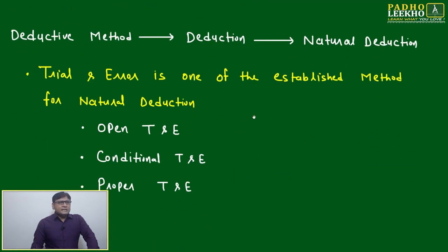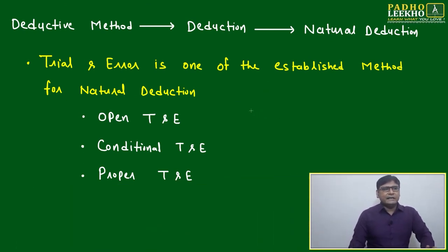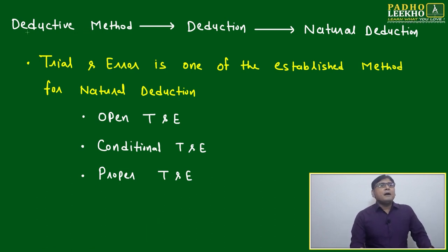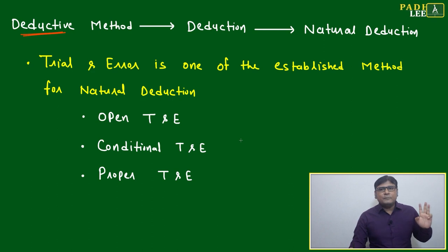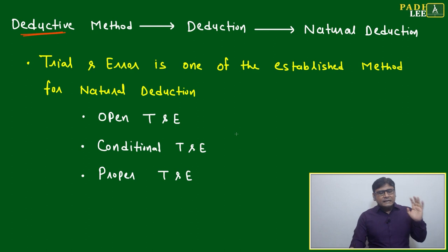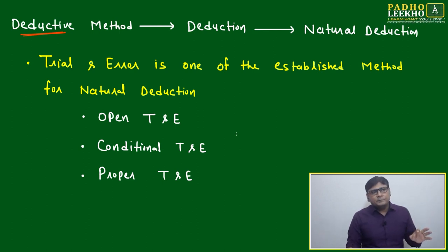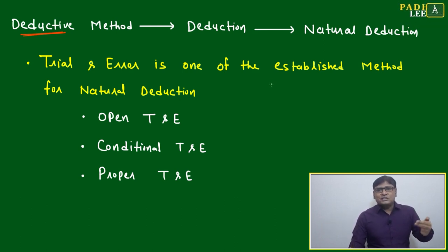For solving LR case sets, we use the deductive method. There are three types of arguments in logic: deductive, inductive, and abductive. For CAT-level preparation, where the conclusion is certain, we use the deductive method. This is appropriate for aptitude papers where conclusions must be definite.